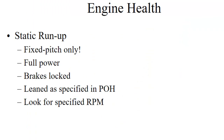Another way to gauge engine health is the static run-up, and this works for fixed-pitch airplanes only. You go to full power with the brakes locked, lean as specified in your pilot operating handbook, and look for the specified RPM — for the Cessna 152 the range is approximately 2280 to 2360 RPM, but look that up in your POH. If you're not getting that, it could indicate a problem with the engine. It's not something we do on every run-up, but if the aircraft doesn't seem to be performing or climbing as well as usual, it's a good quick check.